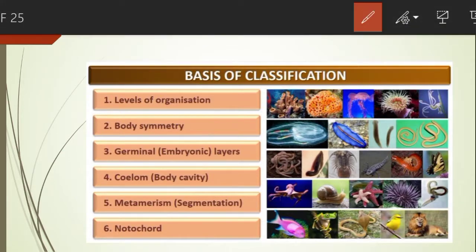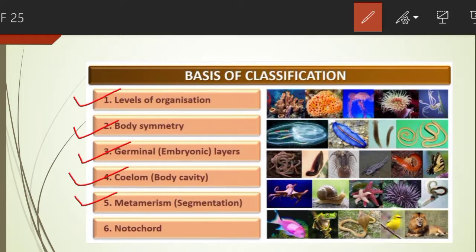In spite of differences in structure and form of different animals, there are certain fundamental features common in various individuals in relation to the arrangement of cells, body symmetry, nature of coelom, and patterns of digestive, circulatory, or reproductive systems. These features are used as the basis of animal classification: levels of organization, body symmetry, germinal layers developed during the embryonic stage, coelom (body cavity), metamerism (segmentation), and presence or absence of notochord.